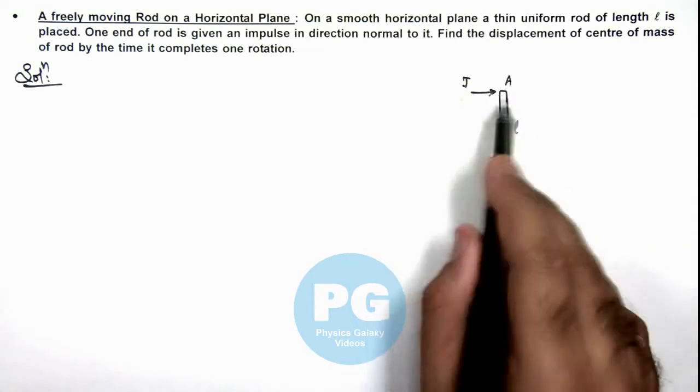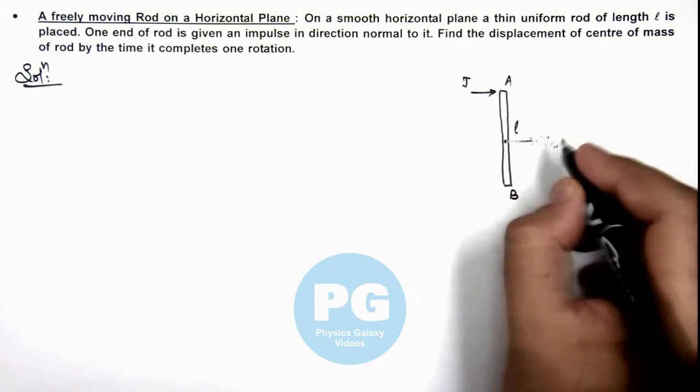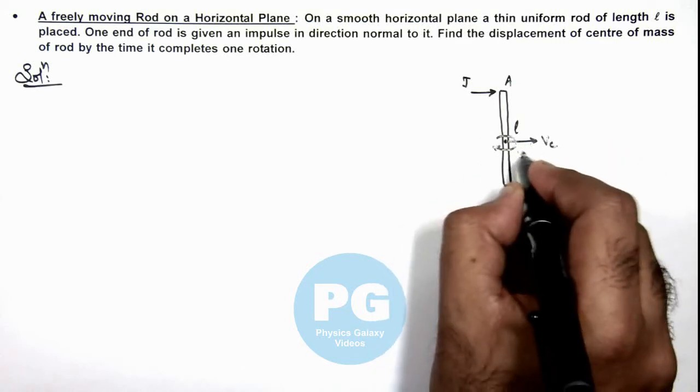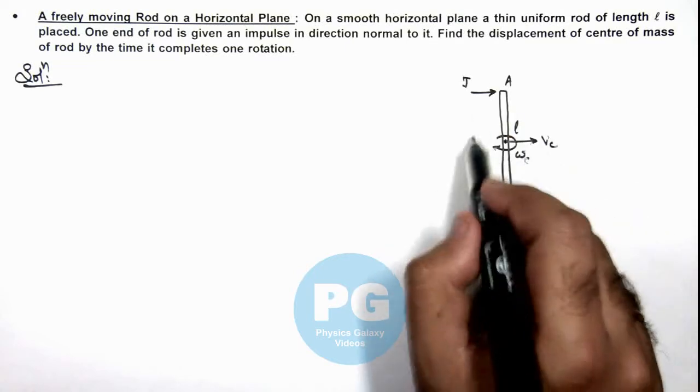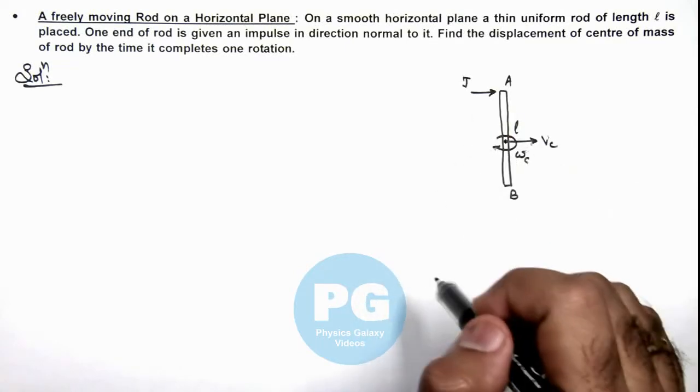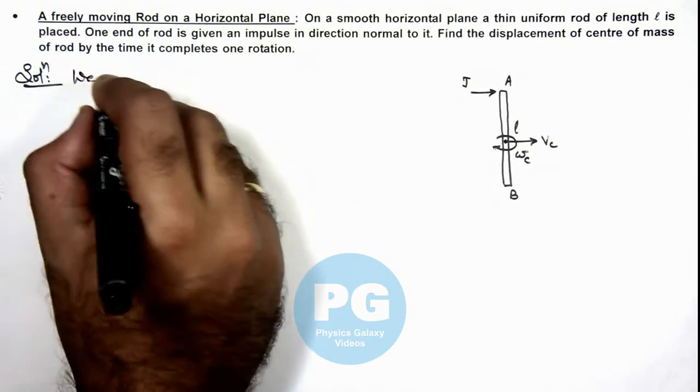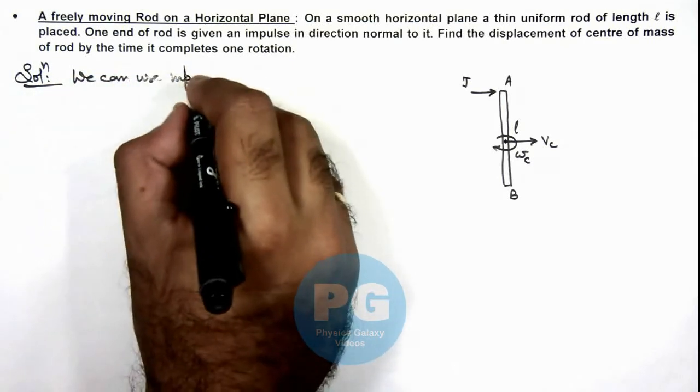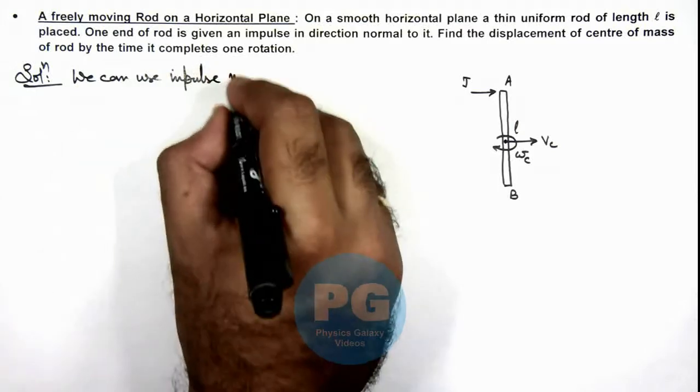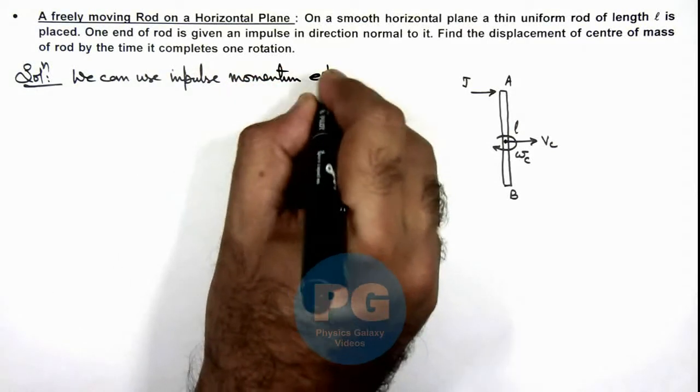So due to this j, center of mass will attain a velocity v_c and it starts rotating at an angular speed omega_c. As we know, free body always rotate about an axis passing through center of mass. So here we can use impulse momentum equation.